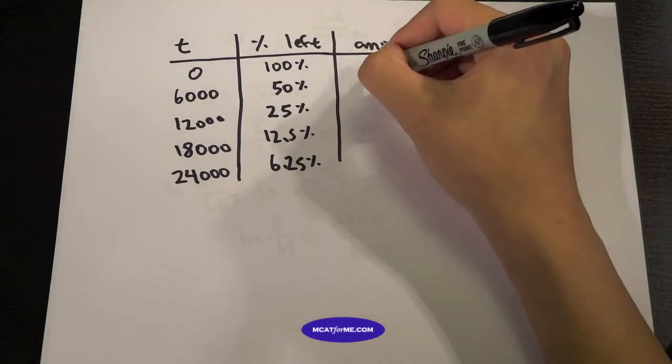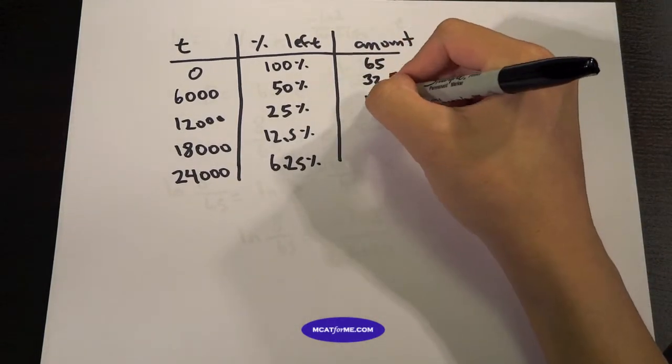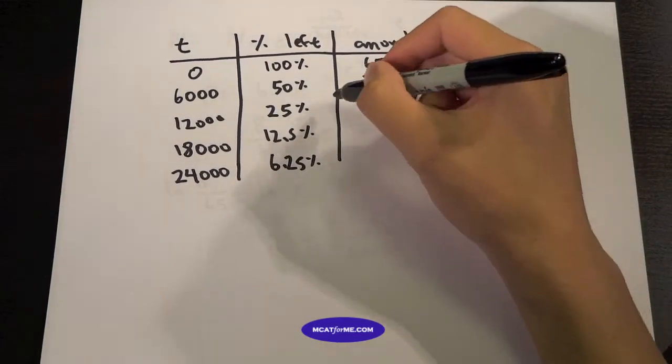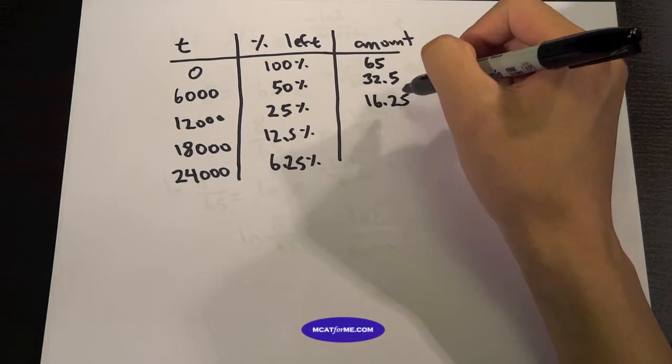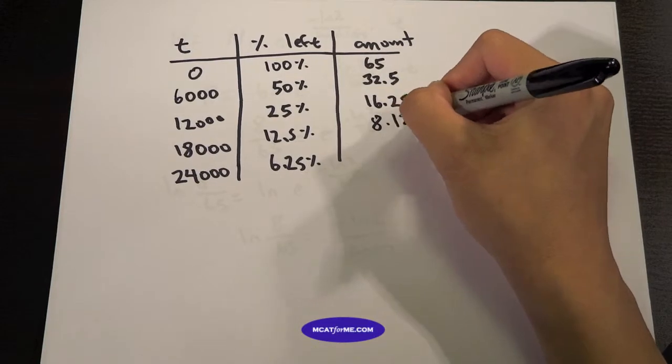So what is our amount? Our amount started with 65, then now we're going down to 32.5. Now we're going down to 16.25, because all we're doing is cutting each number by half. So if we notice here, 16.25 is one quarter of 65.